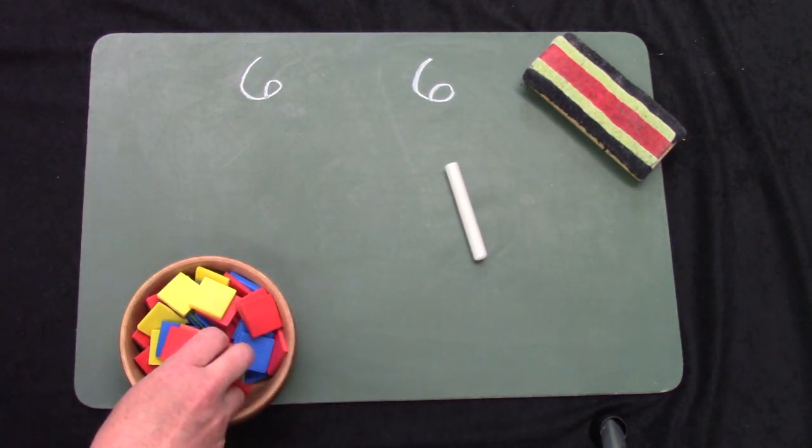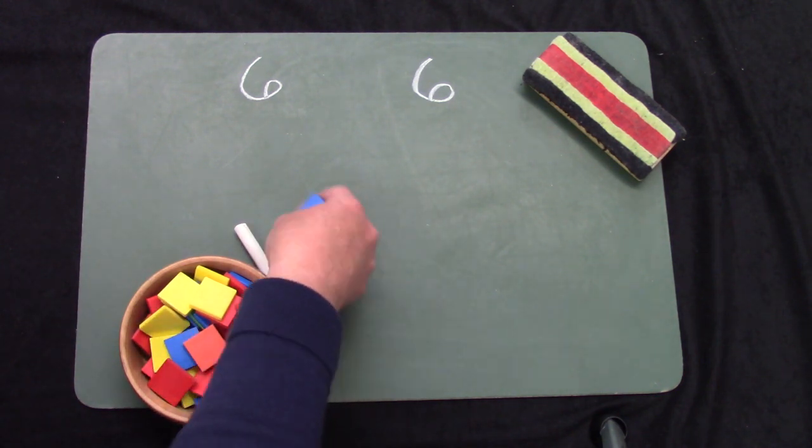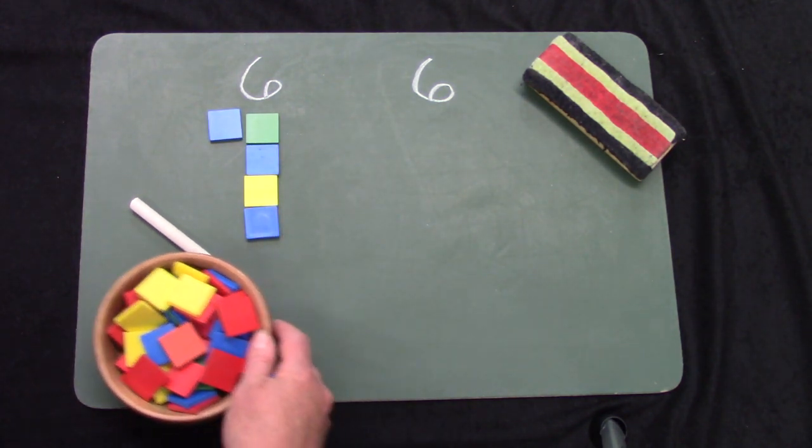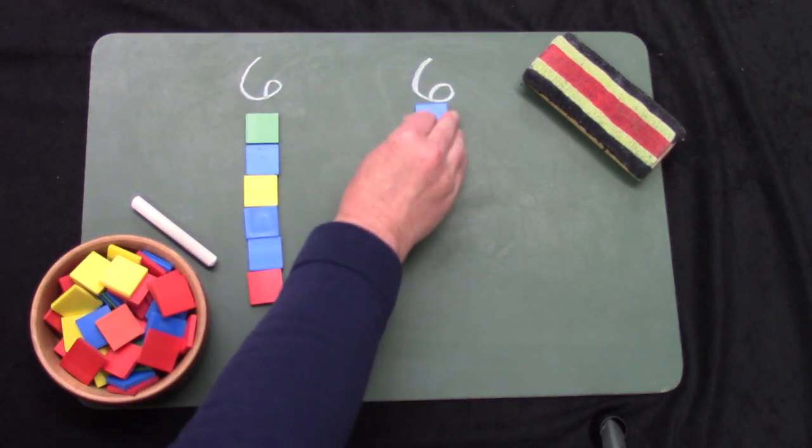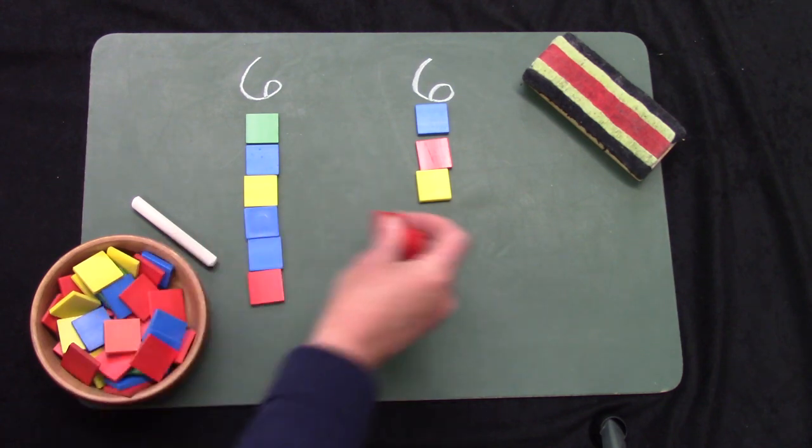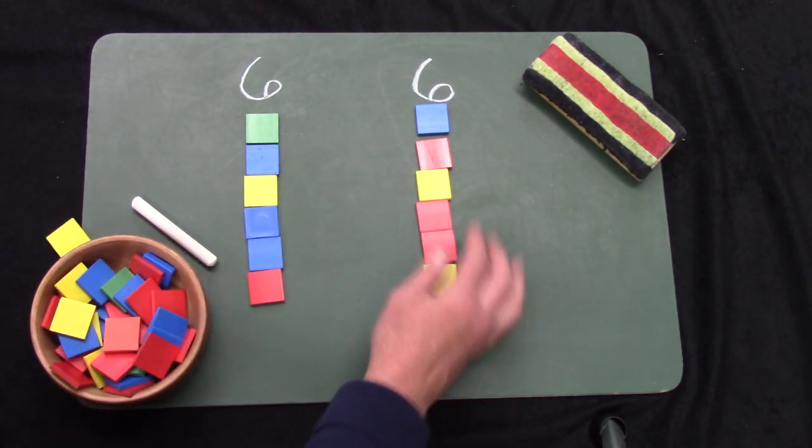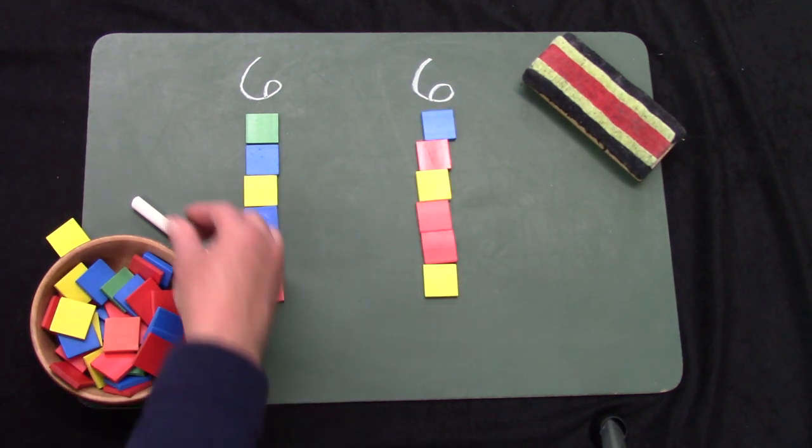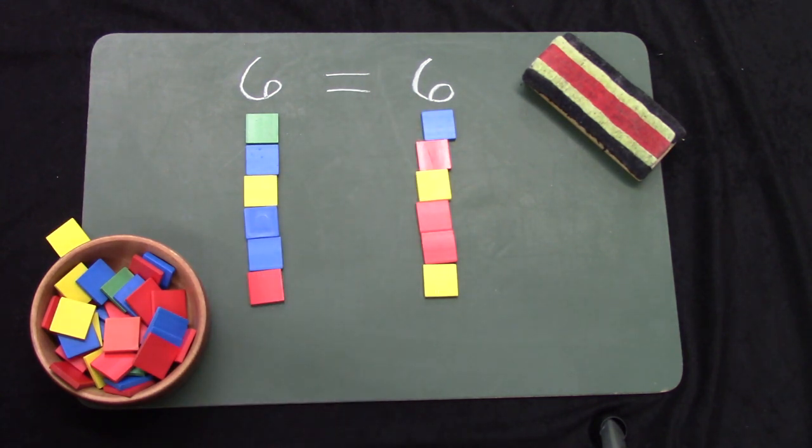Hmm, which one is larger. We can test that out. 1, 2, 3, 4, 5, 6. 1, 2, 3, 4, 5, and 6. They are the same, or they are equal. 6 is equal to 6.